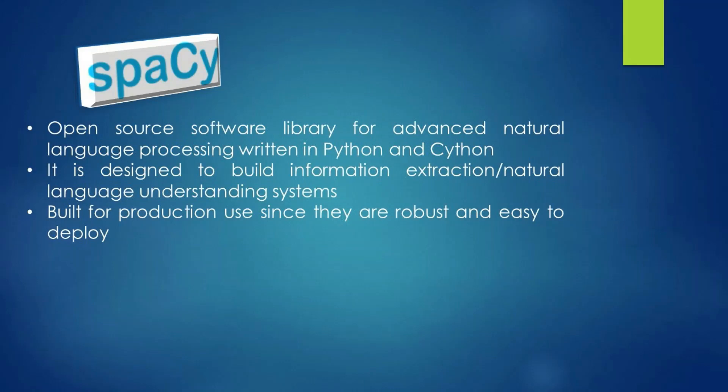Now we will speak about spaCy. It is an open source software library for advanced natural language processing written in Python and Cython — Cython being Python with C semantics. It is designed to build information extraction or natural language understanding systems. It is built for production use since it is very robust and easy to deploy.